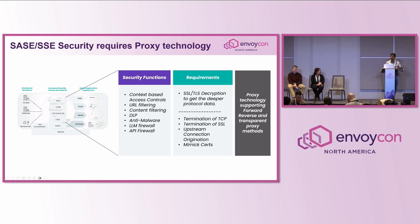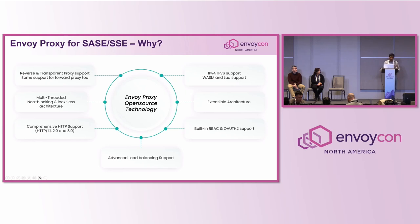Many vendors, including Ariaka, have proprietary proxies today, but we are moving to Envoy because of the many features already available. The key requirement for SASE/SSE is supporting all proxy modes — reverse proxy, transparent proxy, and forward proxy — all at the same time. Envoy already has reverse and transparent proxy support, and we enhanced its forward proxy to have more functionality. It is multi-threaded, non-blocking, and nearly lockless, enabling scaling with number of cores.